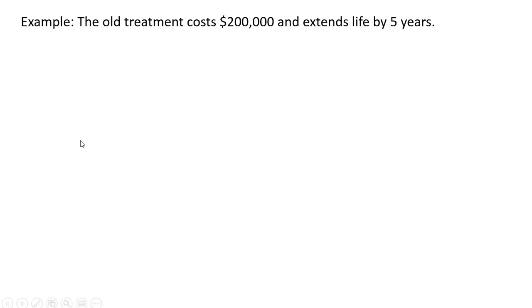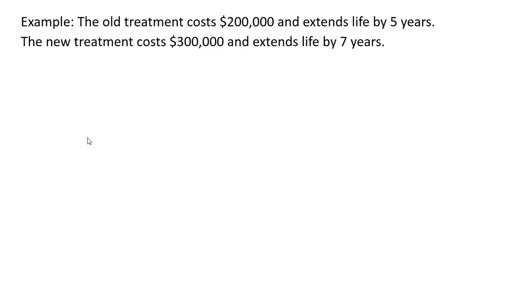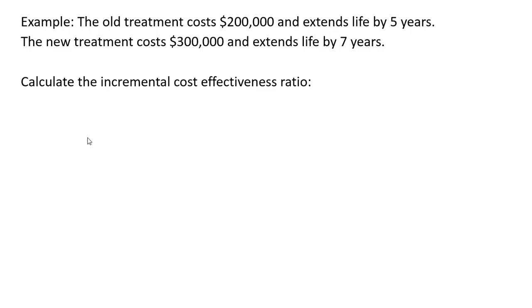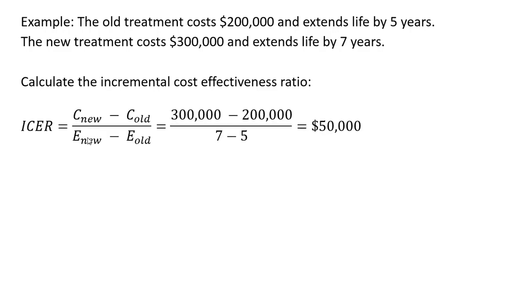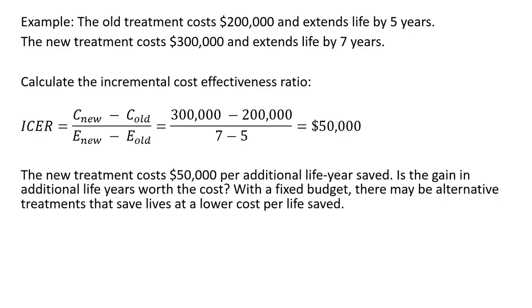Let's do an example. The old treatment costs $200,000 and extends life by five years for some ailment, and the new treatment costs $300,000 and extends life by seven years. Calculating the incremental cost-effectiveness ratio: in the numerator we have 300,000 minus 200,000, which is 100,000; in the denominator, seven minus five — the difference in effectiveness. We get an answer of $50,000. So the new treatment costs $50,000 per additional life year saved.